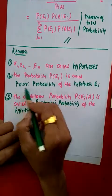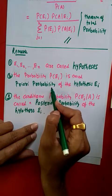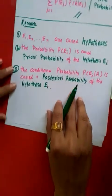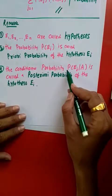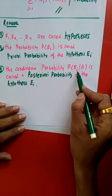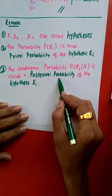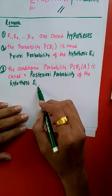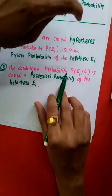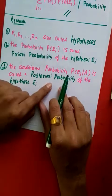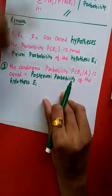The third point is about posteriori probability. P(Ei | A) is known as the posteriori probability of the hypothesis Ei. So in summary: first is the hypothesis, second is the prior probability, and third is the posteriori probability.